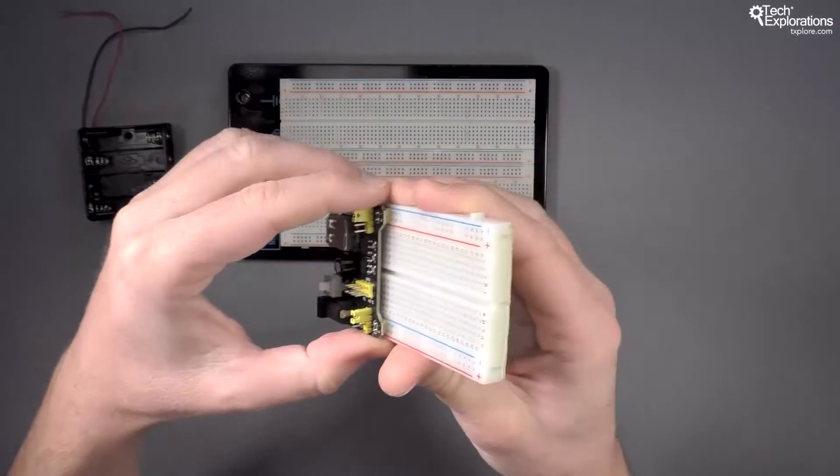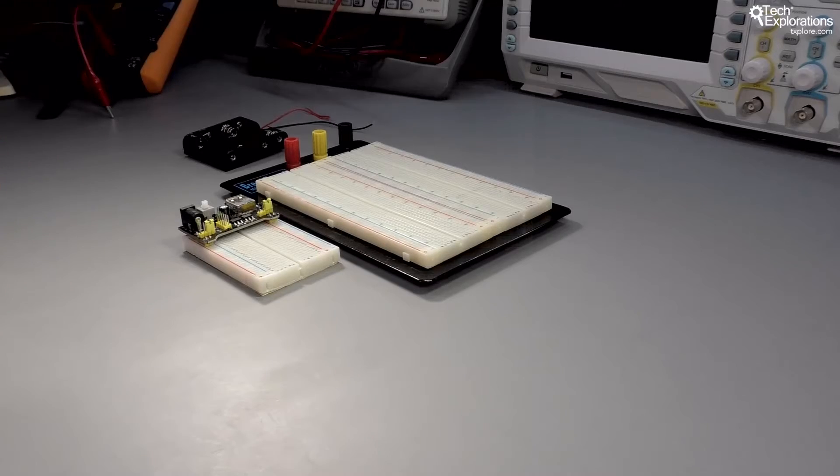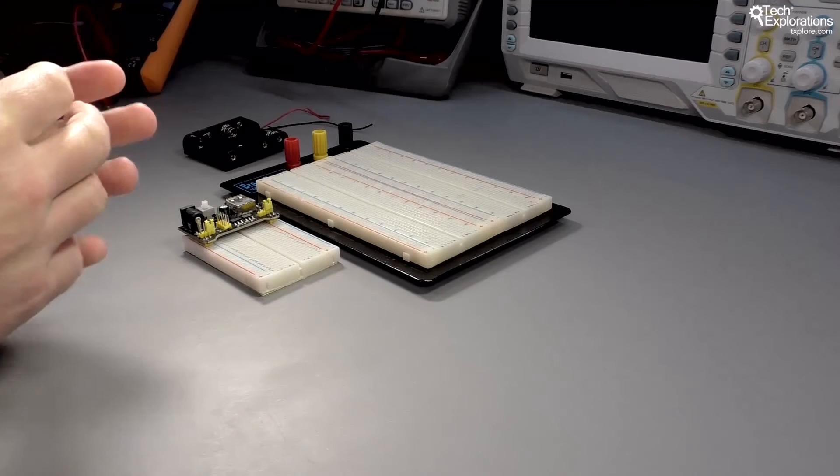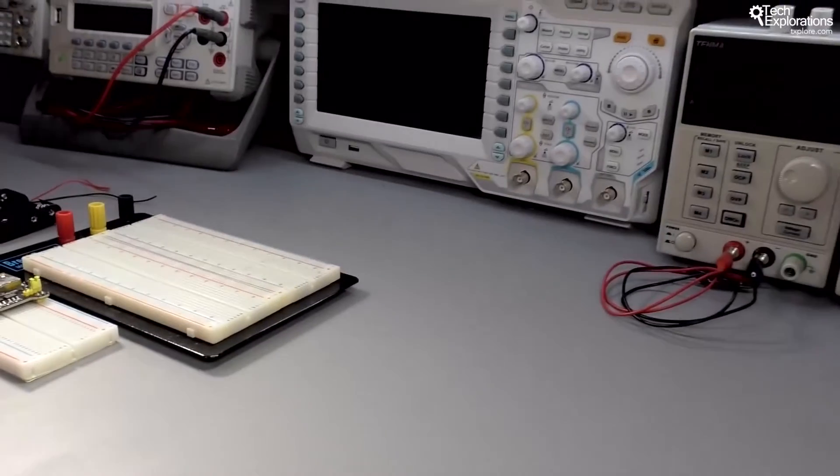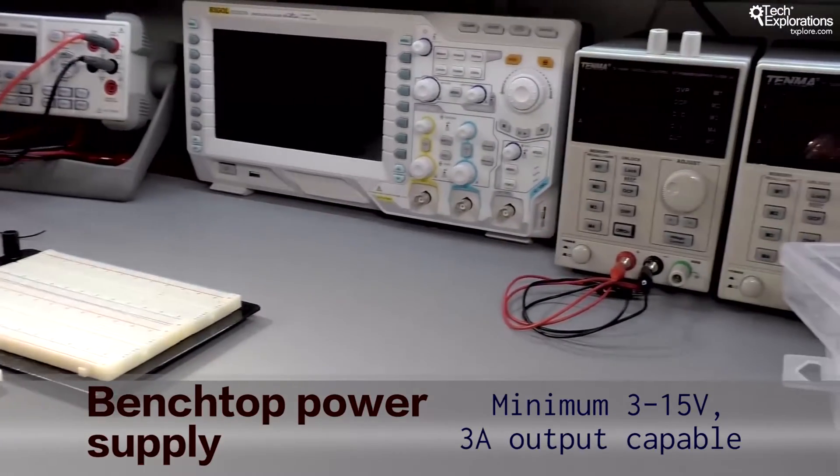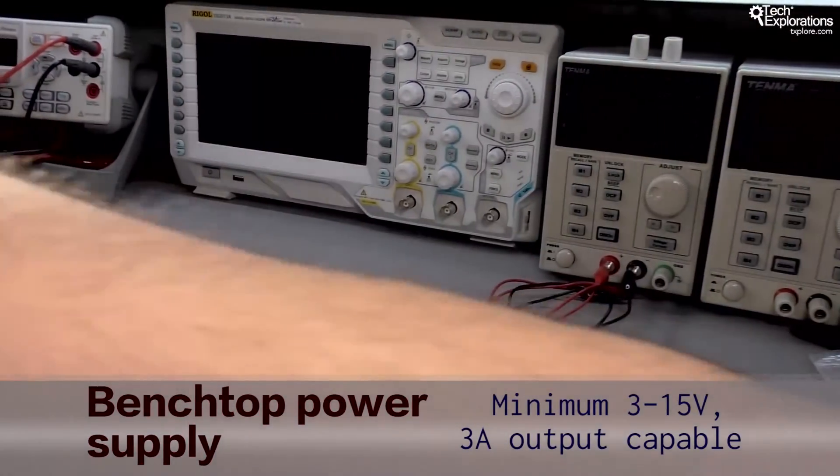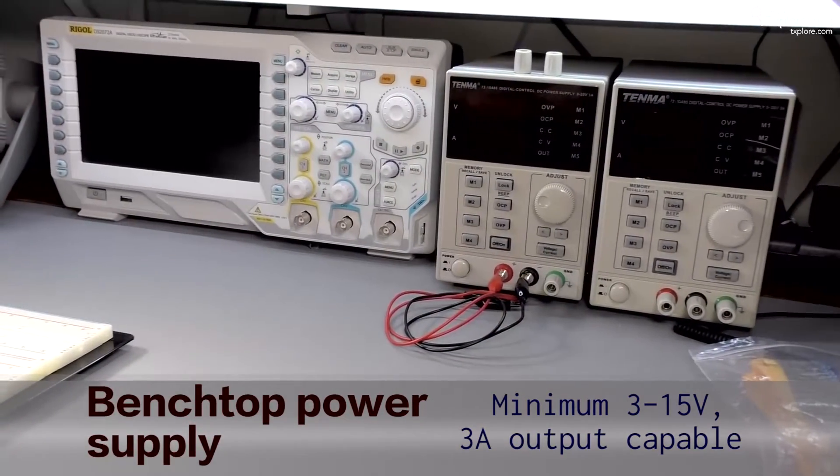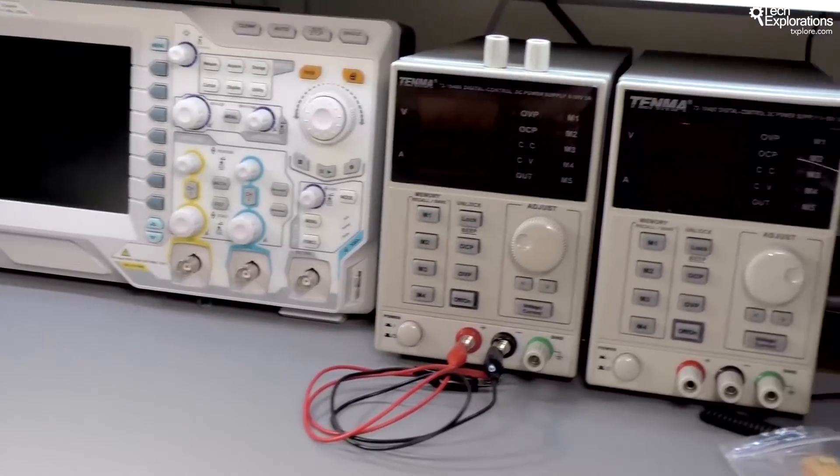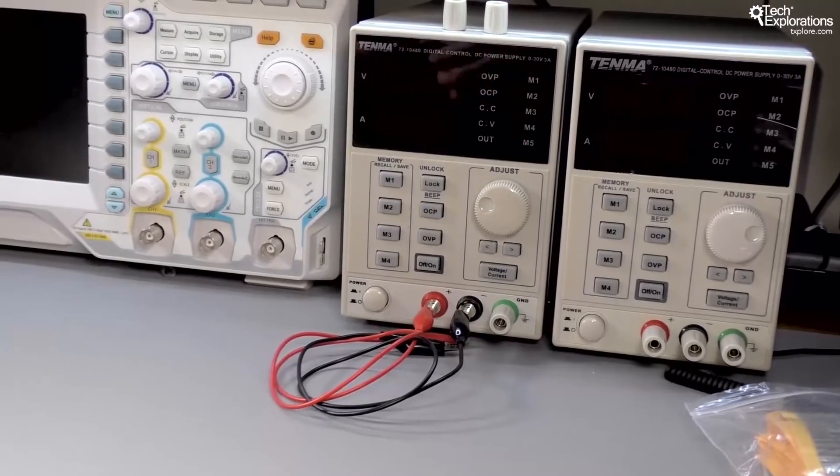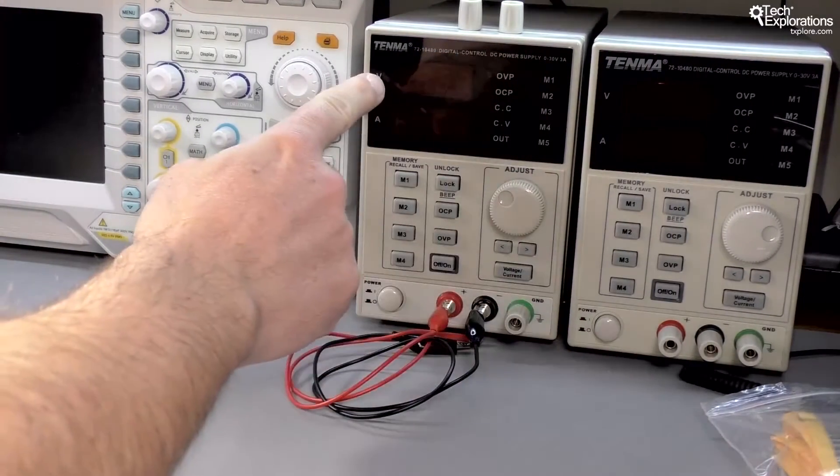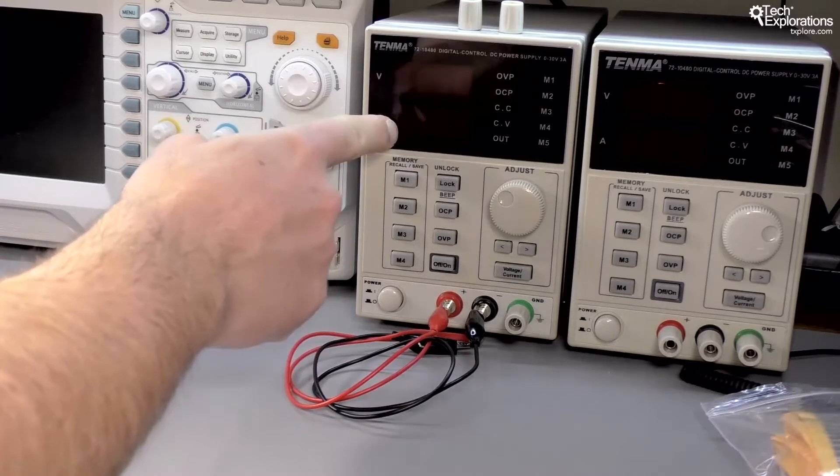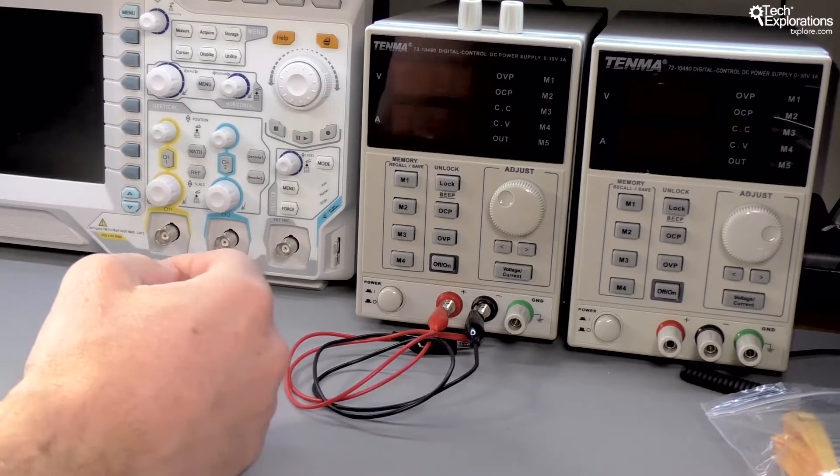Another thing that you can do as far as power supply is concerned is you can use a benchtop power supply. I'll show you mine, so let me turn the camera slightly and move this out of the way. There you go, so that's my benchtop power supply. This is adjustable. I can turn the knob here and I can get voltages and amperage limits as well to exactly the points where I want them to be.